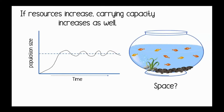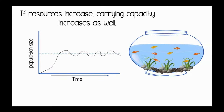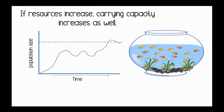But in our fishbowl, it wasn't a matter of space. It was more likely the amount of oxygen that limited the growth of the fish population. If we add more plants, they'll produce more oxygen. And if there's more oxygen in the fishbowl, the carrying capacity can increase — we can support more fish. If the carrying capacity increases, the population will increase as well.